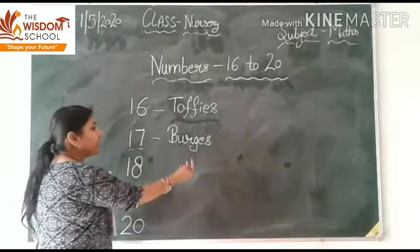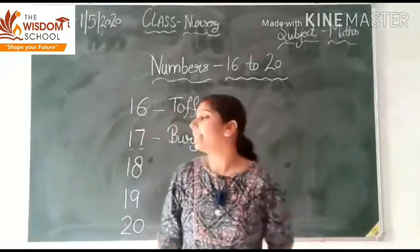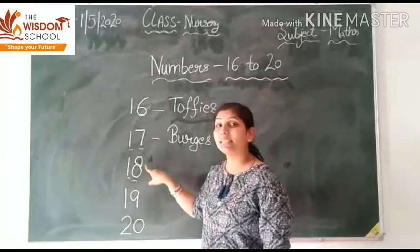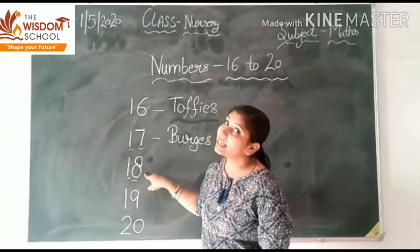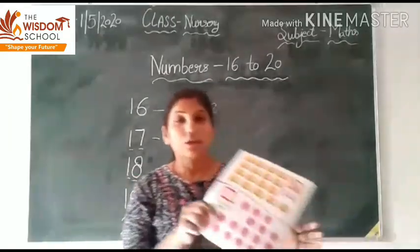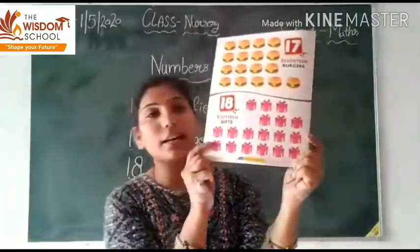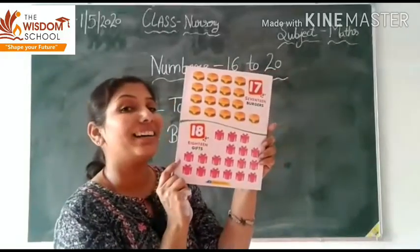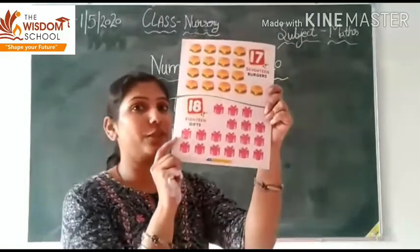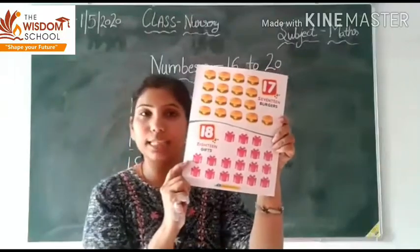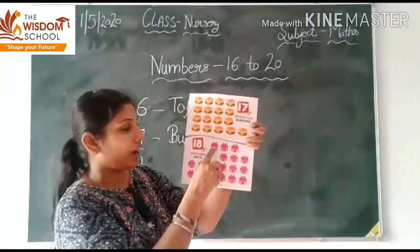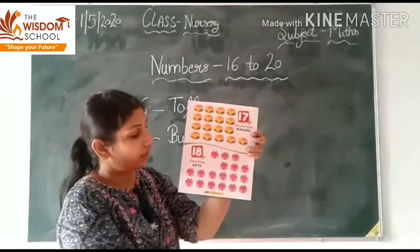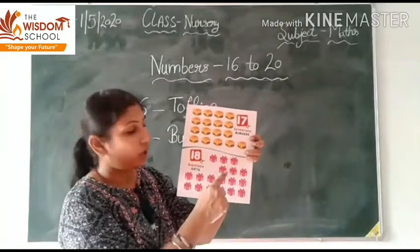16, 17 burgers. Okay, next one is 18. 17 के बाद क्या आता है? 18. Okay, how many gifts are there? कितनी सारी gifts हैं? ऐसे gifts आपको आपके birthday पे मिलते हैं ना? Right — यह वही gifts हैं. Let us count.